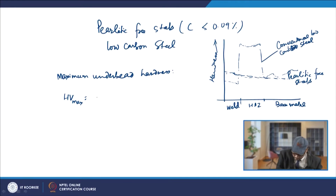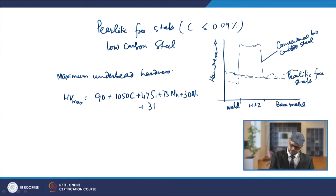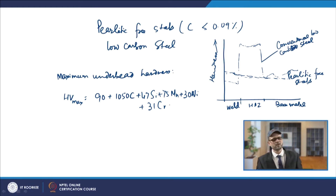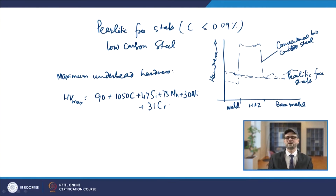The formula is: HV max = 90 + 1050C + 47Si + 75Mn + 13Ni + 31Cr, where C, Si, Mn, Ni, and Cr are in percentages. The maximum contribution comes from the percentage of carbon — as you increase carbon, under normal cooling conditions where cooling rate is higher, hardenability is improved, and carbon's contribution is maximum.